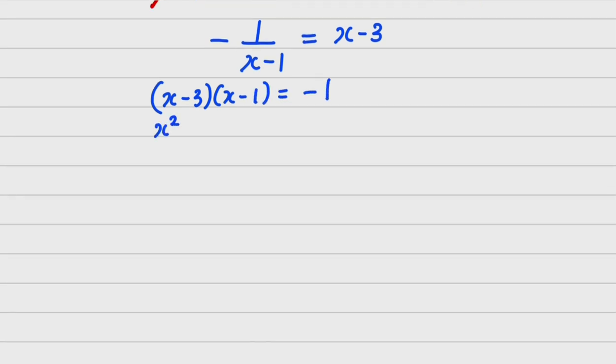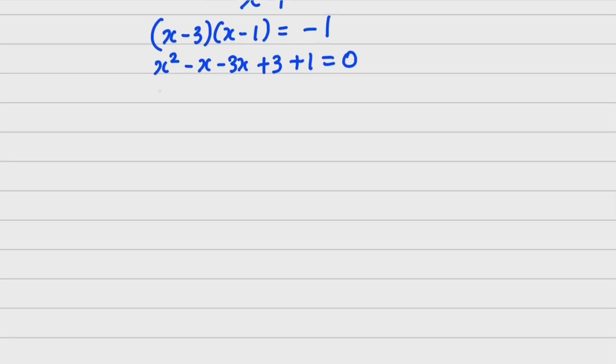Expanding it, I have X squared. Then we have minus X minus 3X, then plus 3. Then bringing 1 over is going to be plus 1 is equals to 0. Hence, this is going to be X squared minus 4X plus 4 is equals to 0.